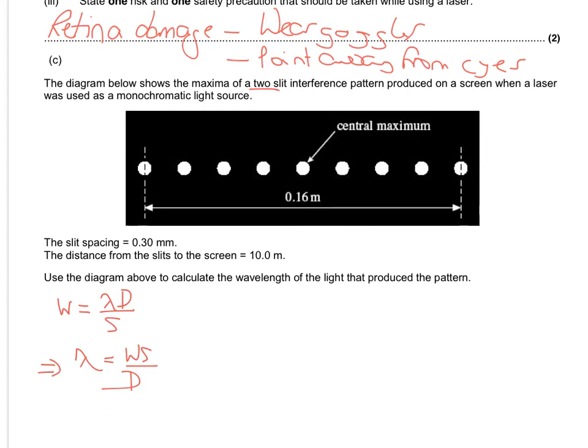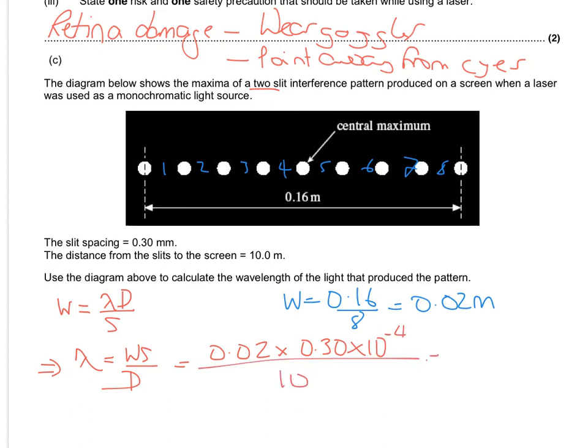And first thing, we need to calculate w. So 1, 2, 3, 4, 5, 6, 7, 8 spacings takes 0.16 m. So we're going to divide this value by 8, and we'd get 0.02 metres. So putting that back in there, you'll get 0.02 times by the slit spacing, so 0.30 times 10 to the minus 4 to convert it into metres, and then divide that by 10, and we get a value of 6.0 times 10 to the minus 7 metres, because it's a wavelength. And that would be your final wavelength there.